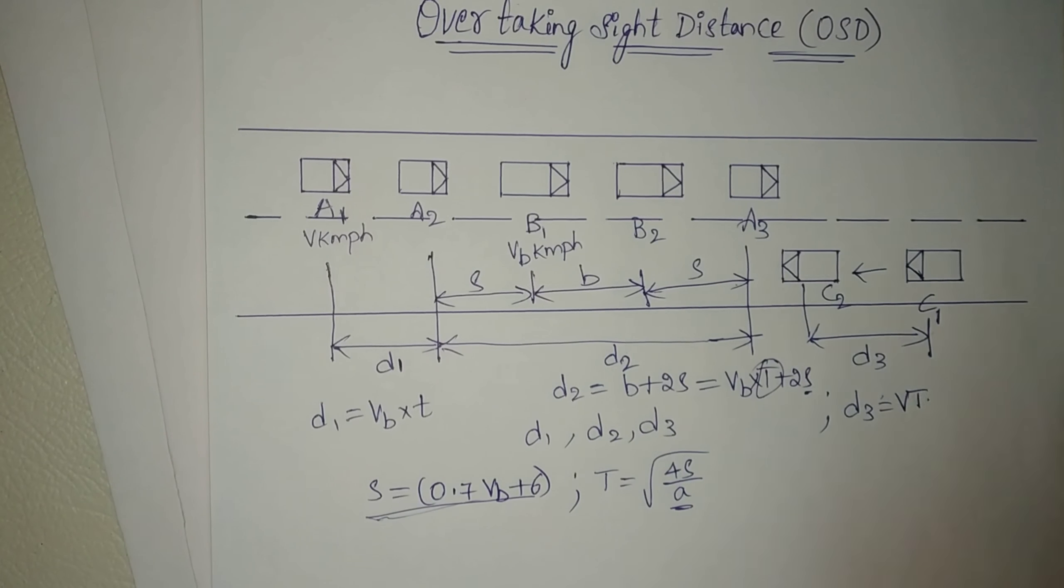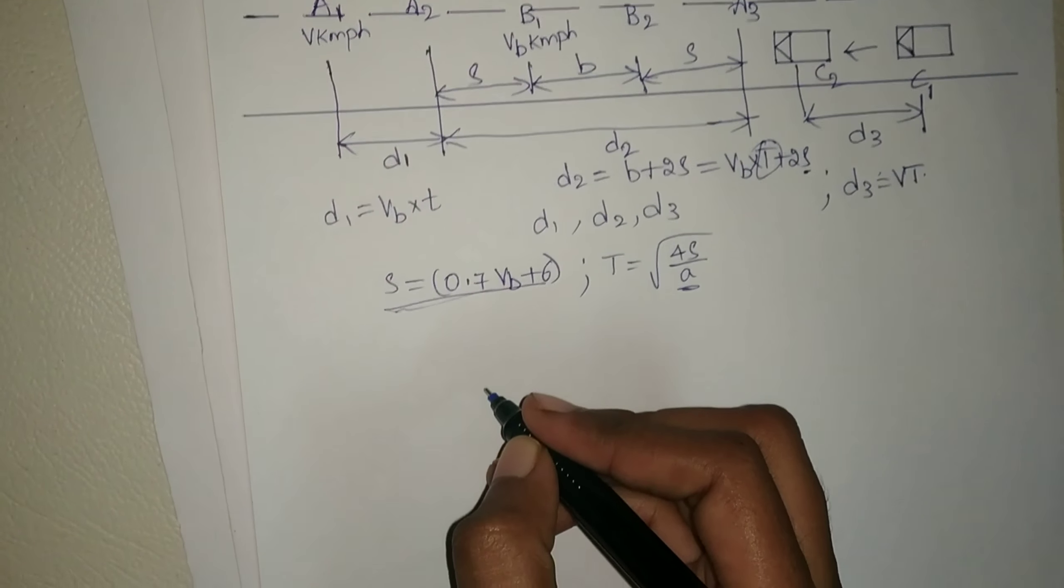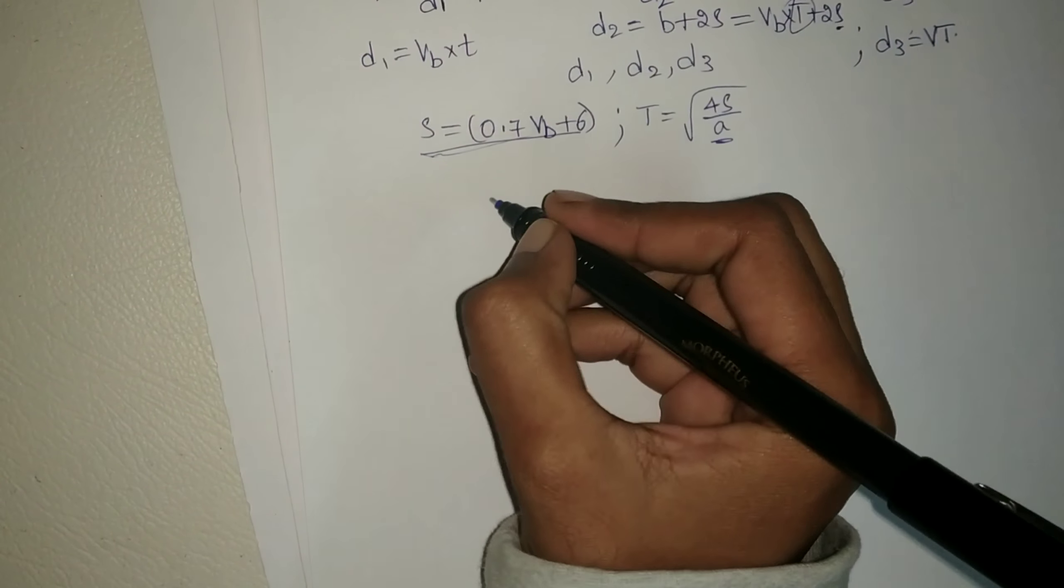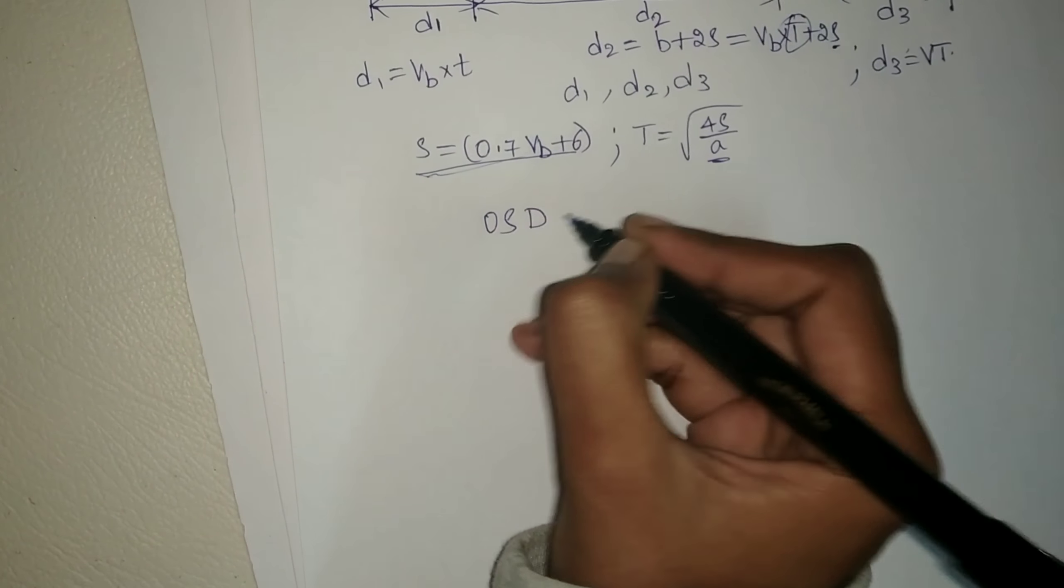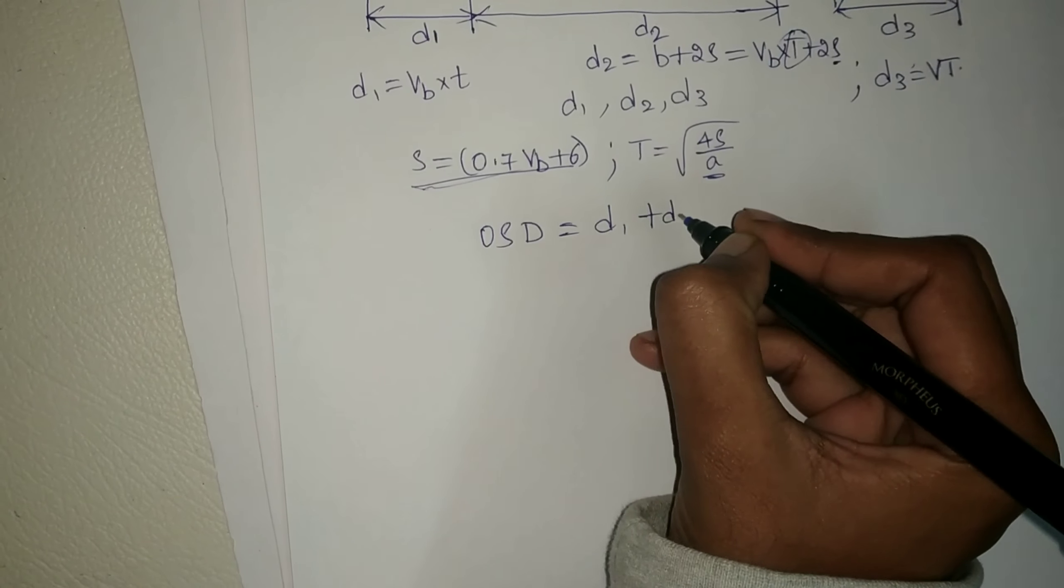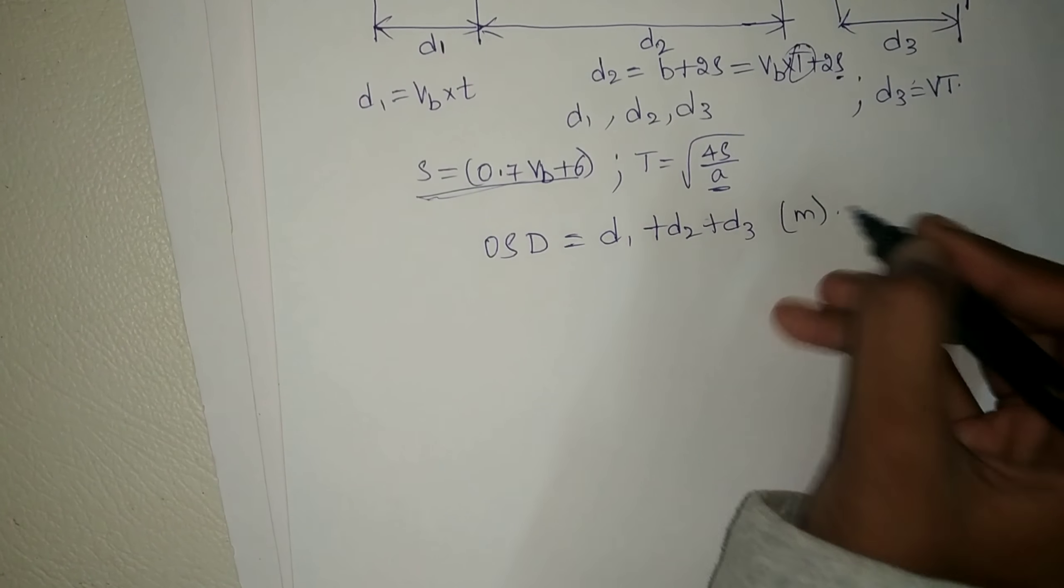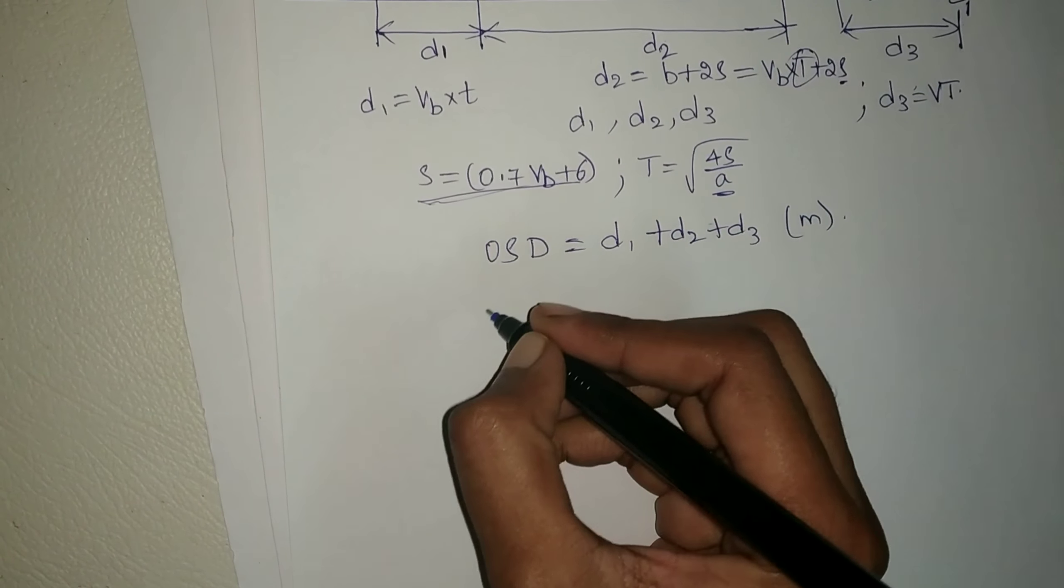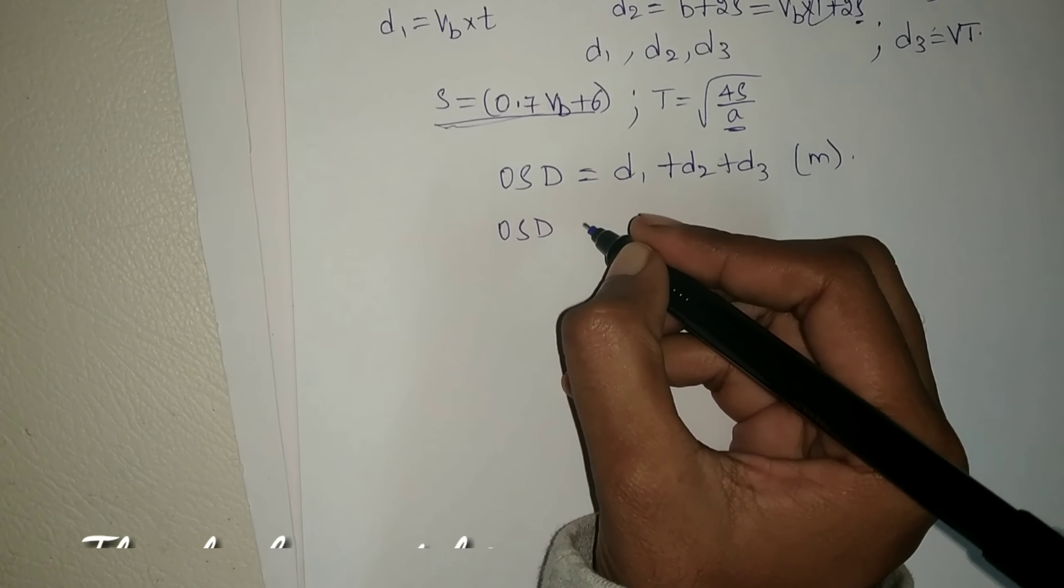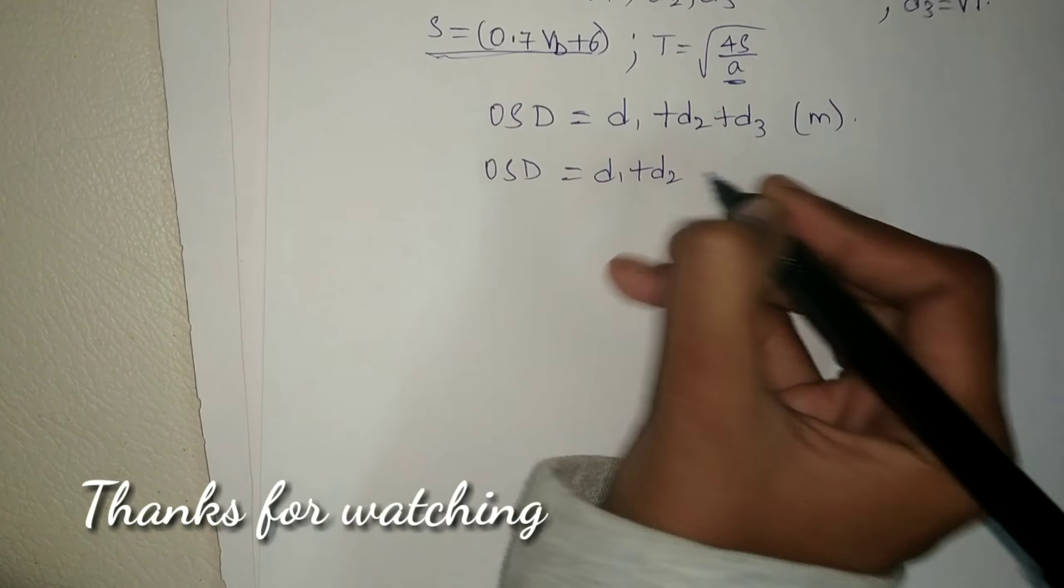Thus, on a two-lane road with two-way traffic, the overtaking sight distance is equal to d1 plus d2 plus d3 in meters. And for overtaking sight distance on one-way traffic, it is equal to d1 plus d2 in meters.